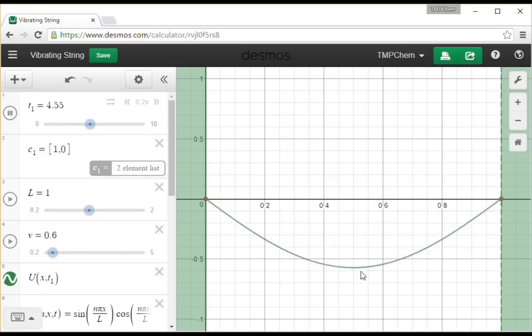They stay in the same place in space and just move around in time. They're not moving to the left or to the right, they're just changing what their relative magnitude is. So that is for the first normal mode.